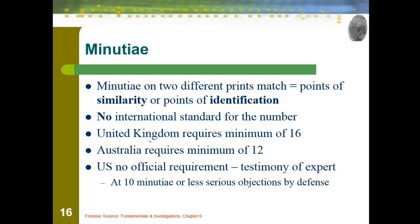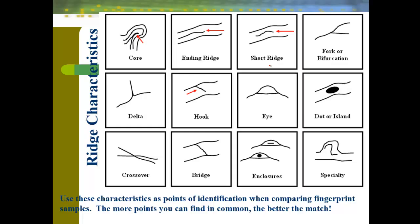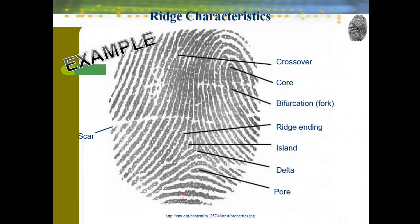Minutiae are those minute — small — differences that make each person's fingerprints unique. There's no international standard for how many minutiae each country requires for a match, so it's a bit of a debate. Characteristics include: the ending ridge, where a ridge just stops; the core, the center of our ridge system; the delta, the triangular part; a hook where a ridge comes out; an eye where there's an opening; a dot; a bridge where two ridges are connected; and a crossover. These all help us label and identify fingerprint types.